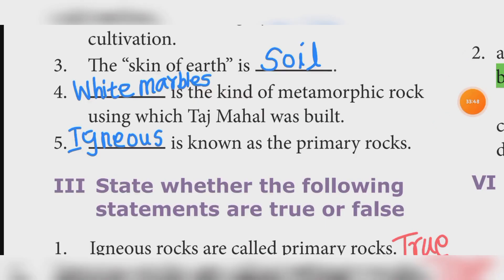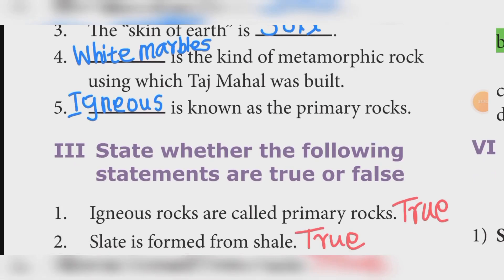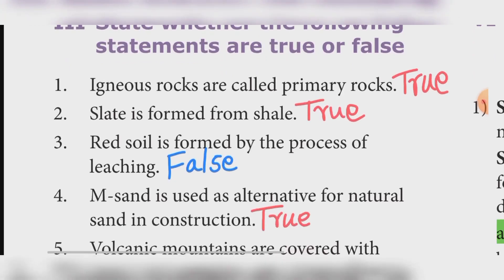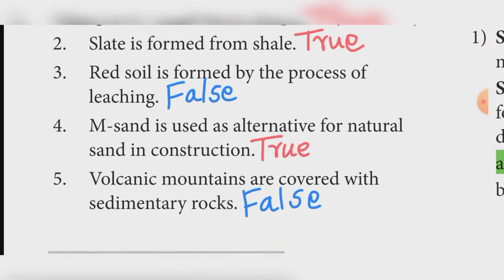State whether the following statements are true or false. First: Igneous rocks are called primary rocks — True. Second: Slate is formed from shell — True. Third: Red soil is formed by the process of leaching — False.